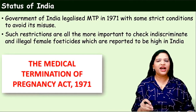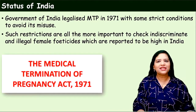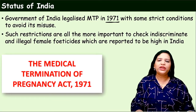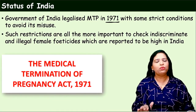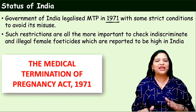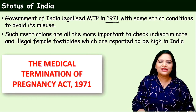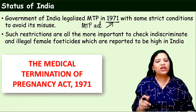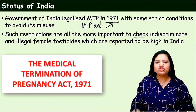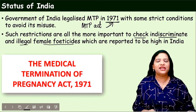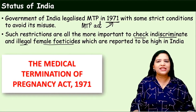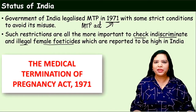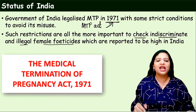The Government of India has legalized MTP in 1971 with some strict conditions to avoid its misuse. The Indian government said that if you want to do abortion, you could execute abortion but there must be a noble cause. This is called the MTP Act, which came in 1971. Its main important purpose is to check the indiscriminate and illegal female feticides. Previously in the 1950s and 1960s, if they found the growing embryo was female, they used to abort it. In order to reduce such female feticides, mainly this act was passed.